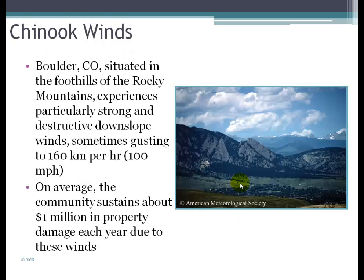One place in the U.S. where we see Chinook winds is Boulder, Colorado, which sits right at the foothills of the Rocky Mountains. They experience very strong and destructive downslope winds — Chinook winds that can reach up to 100 miles per hour. They come on very suddenly and can cause significant damage to the community.